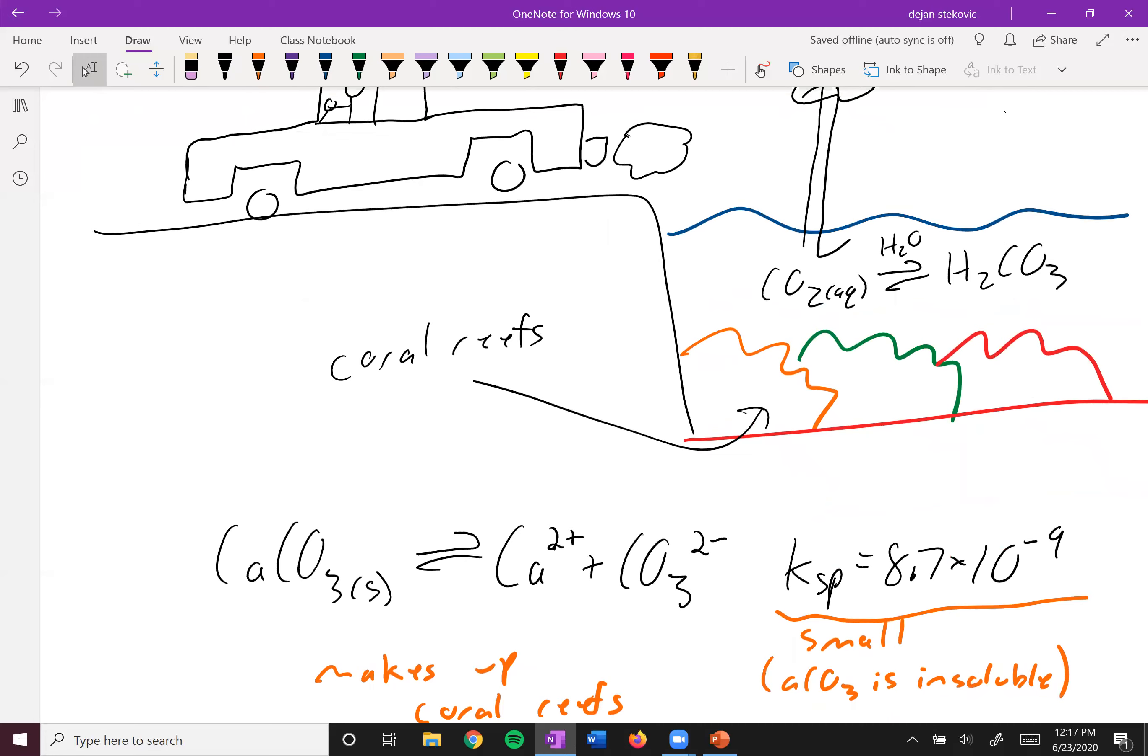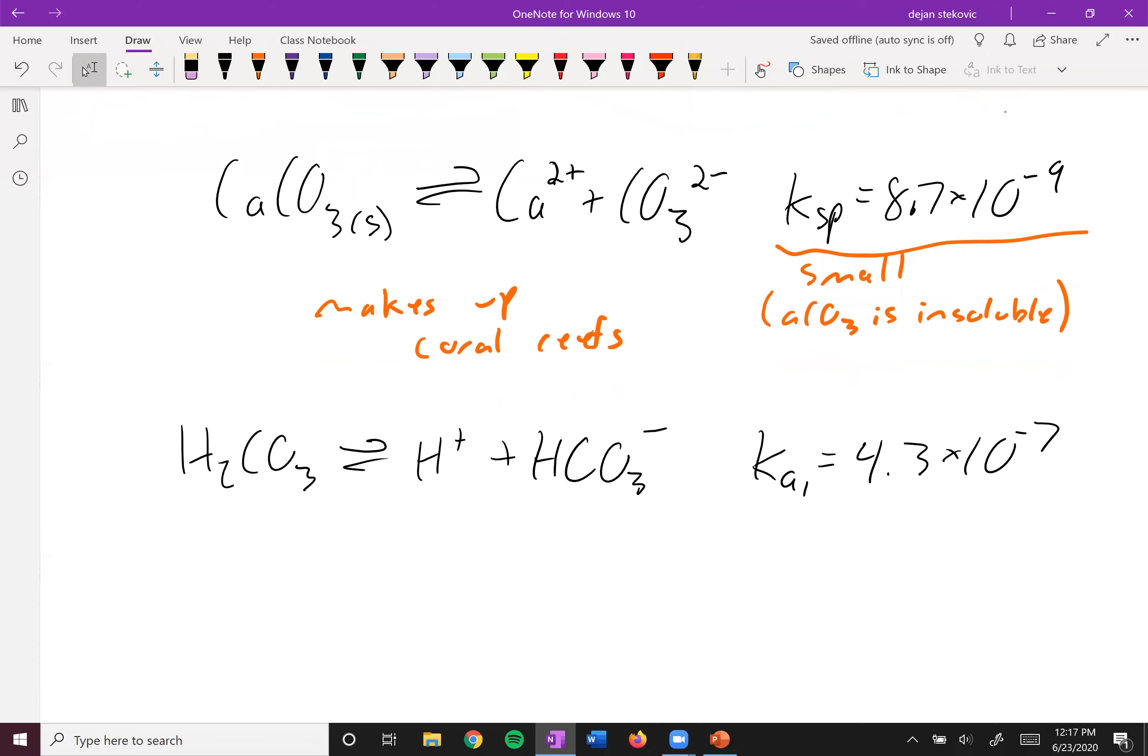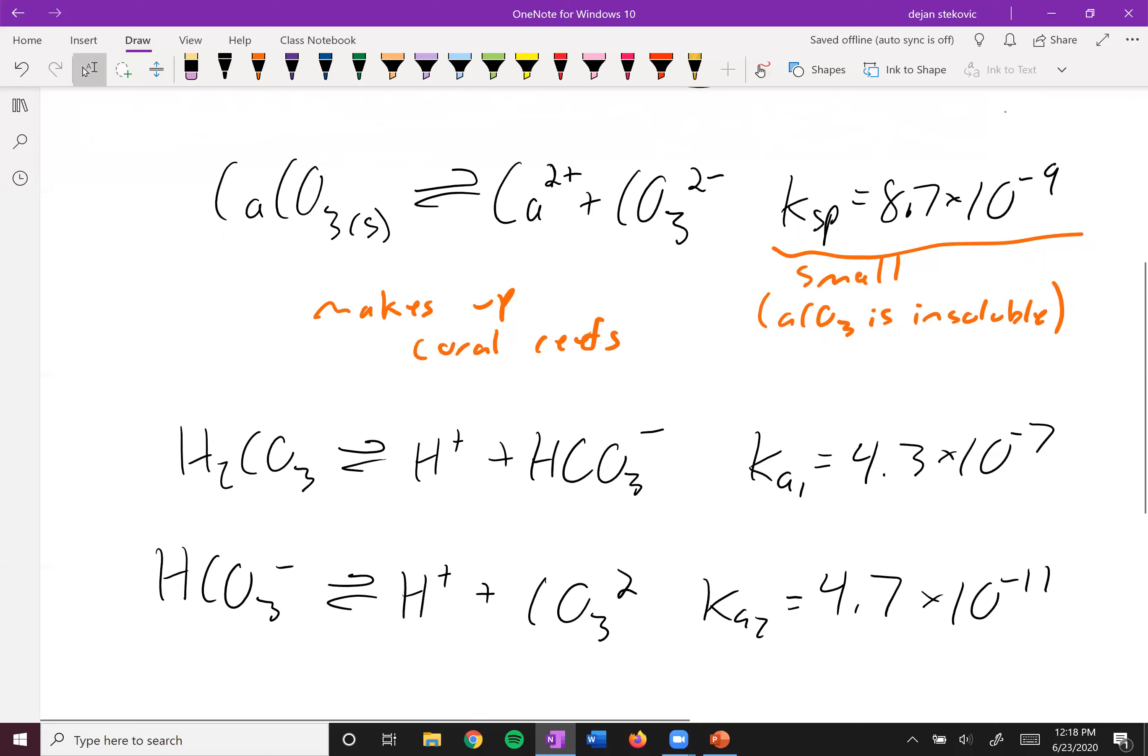And of course, H2CO3 is an acid, so it can act as an acid. Here's carbonic acid with a ka1 equal to 4.3 times 10 to the negative 7. It's a diprotic acid, so it can donate one proton and then it can donate another proton with a ka2 equal to 4.7 times 10 to the negative 11.